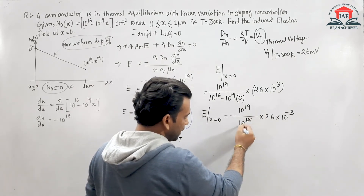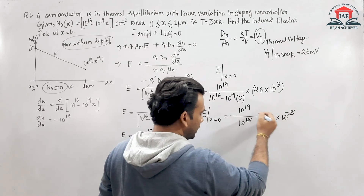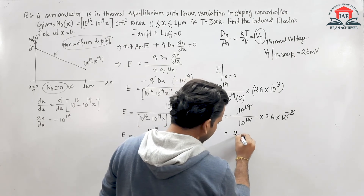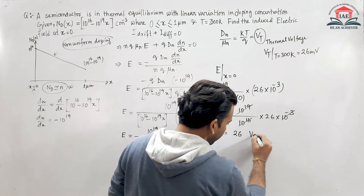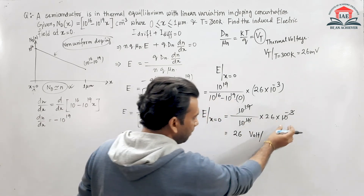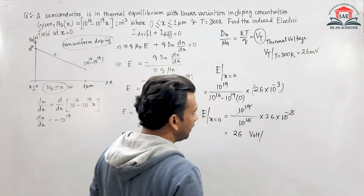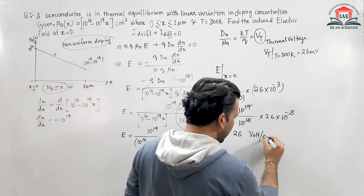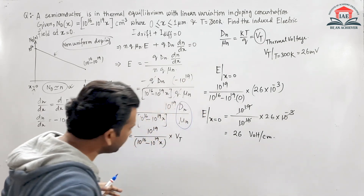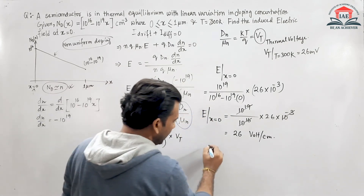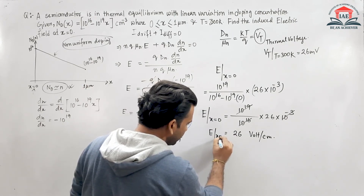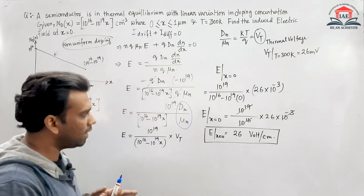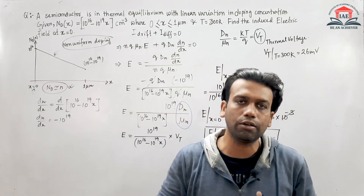Simplifying: 10^19 / 10^16 = 10^3, and multiplying by 26 * 10^-3, we get E = 26 V/cm. So the induced electric field at x = 0 is 26 V/cm.